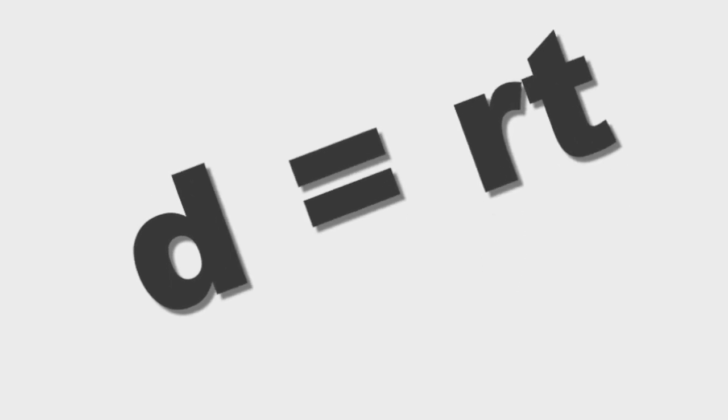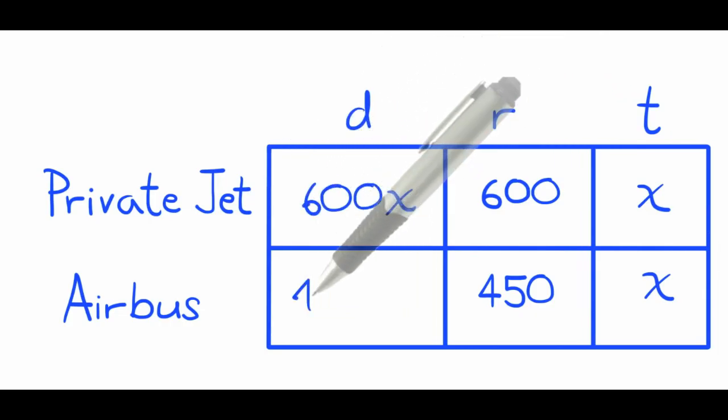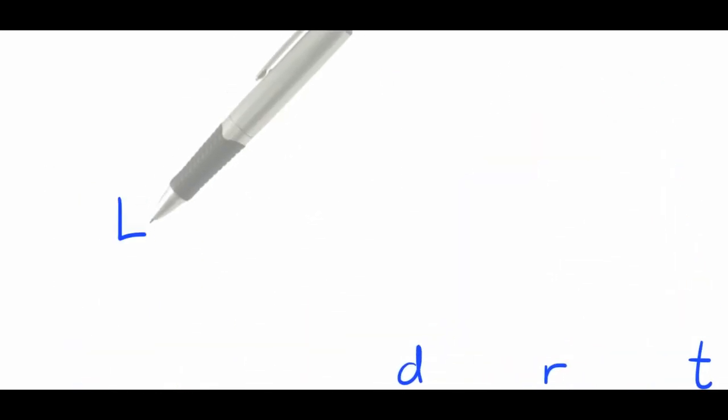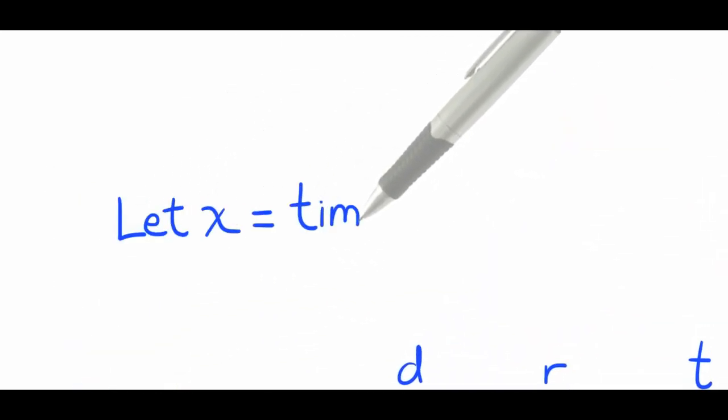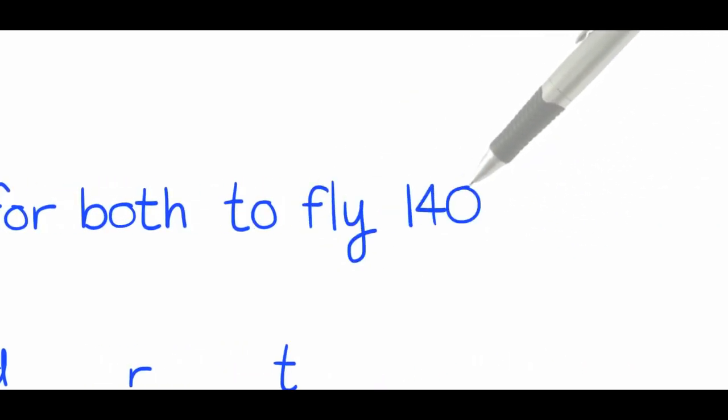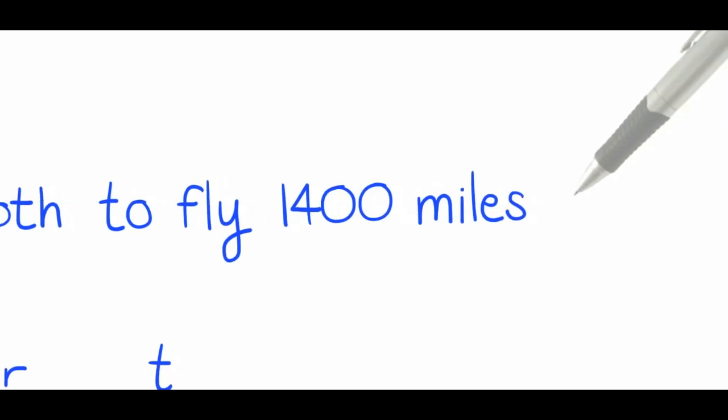Distance equals rate times time. So multiply rate and time for each distance. Don't forget to write out, let x or define x to be time for both to fly 1,400 miles apart.